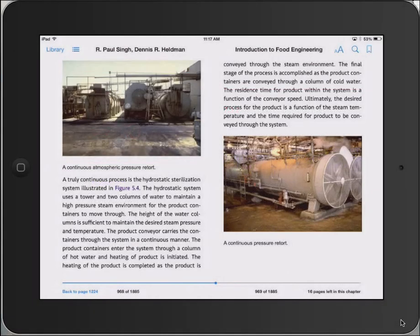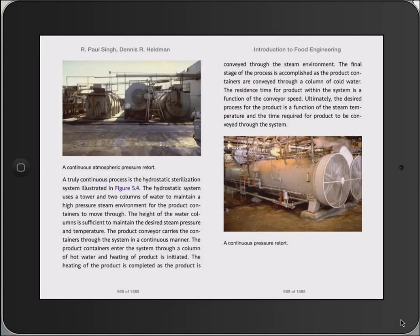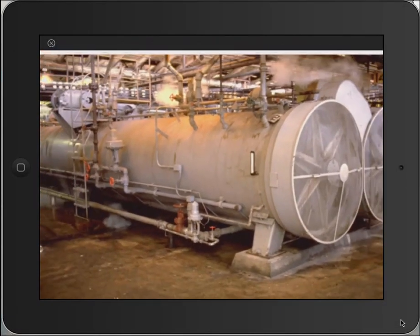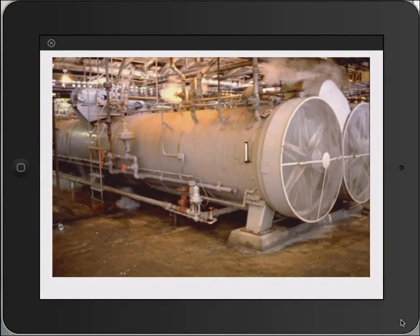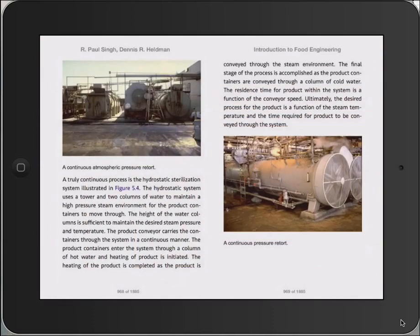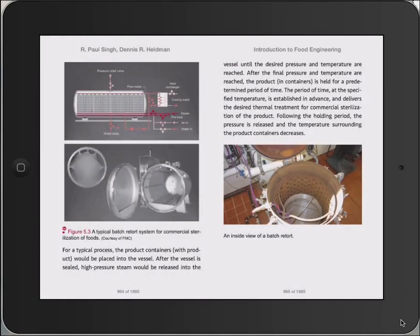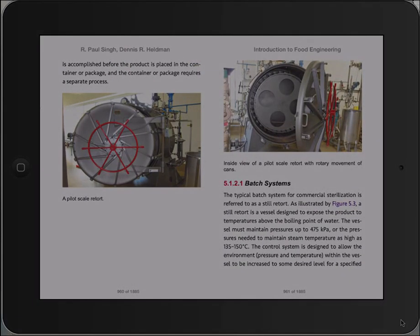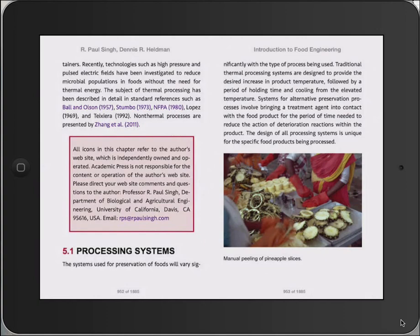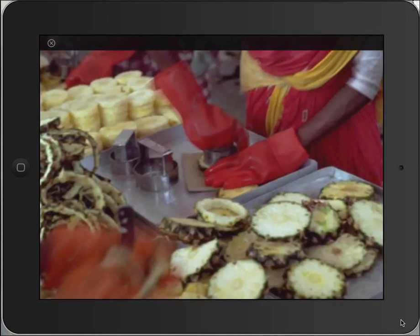There are numerous photographs taken from industrial operations. For example, here we see pressure retorts used in canning and other types of retorts. There are also illustrations of industrial operations from around the world, such as how pineapple slices are prepared manually for canning in a processing plant in India.